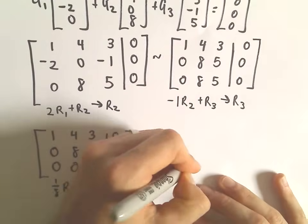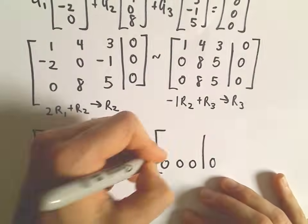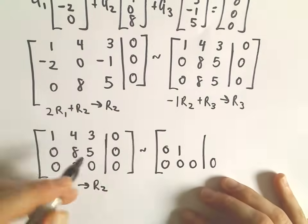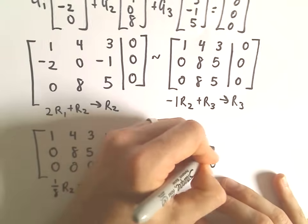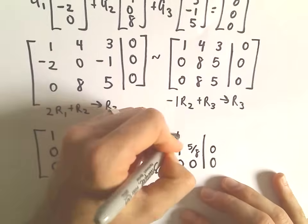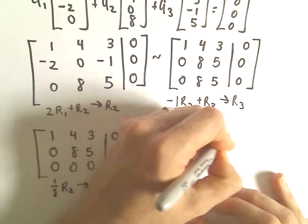So if I do that, again, we're leaving the third row alone. We have 0, 1, I guess we'll have 5 8ths, and then 0. Again, leaving the first row alone.